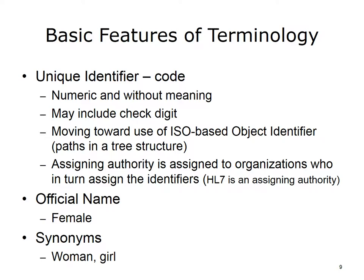We can express the name and concept of the data element in any language. The code might include a check digit for detecting entry errors, and the coding system needs to be universal. The movement for assigning codes in the future is toward using ISO object identifiers, OIDs. However, most vocabularies in use today already have a coding system unique to the controlled vocabulary. In many cases, the codes attempt to carry information in their format and structure — for example, the code shows the body system involved, linkages, or the code relates to the name, such as M equals male.